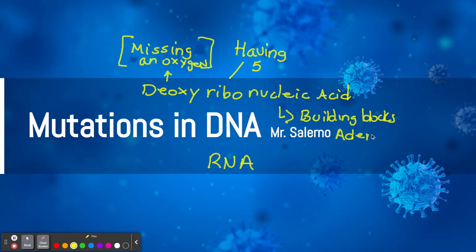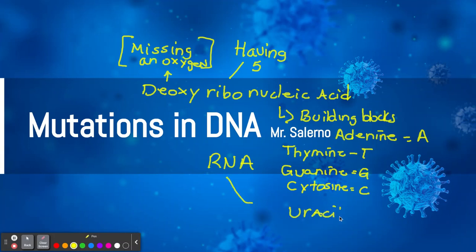And we have adenine, which we'll just use as an A. Let's put one over here. We have thymine, which is T. We have guanine. And they're not in any order here. I'm just writing them out. And then we have cytosine. Now, there's another one, uracil, that RNA uses, not DNA. So we'll just put uracil over here. And we'll explain it. So those are the building blocks. And that's deoxyribonucleic acid. So let me show you a picture of what I mean by missing an oxygen and having five. So if you need to write this down, write it down, pause the tape.